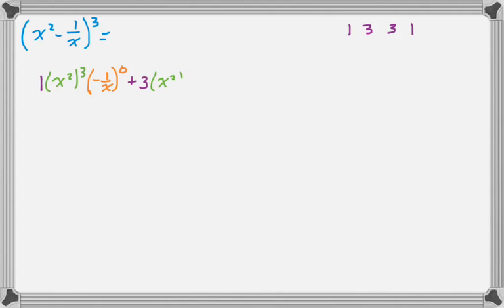And then plus 3, and first thing to the 2nd. Second thing to the 1st. Plus 3, and that will be first thing to the 1st. And second thing to the 2nd. And then plus 1. First thing to the 0, and the second thing to the 3rd.